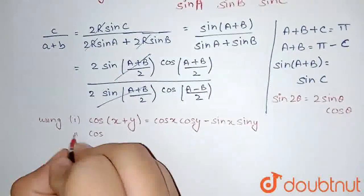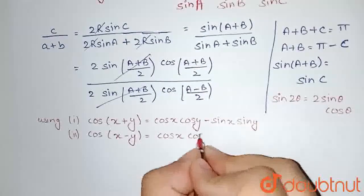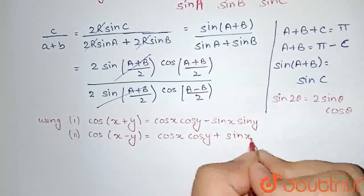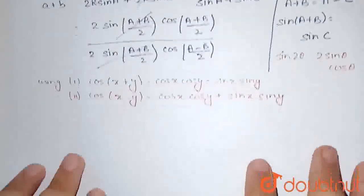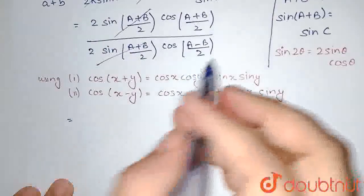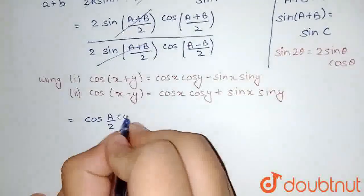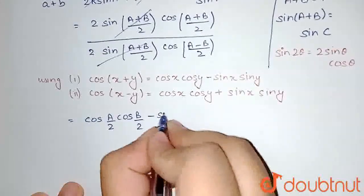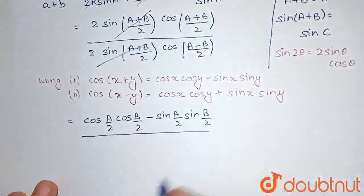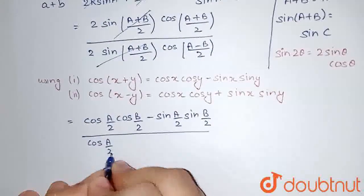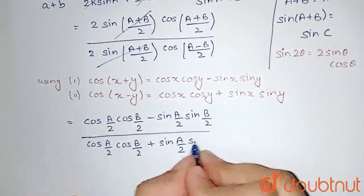Using these two formulas, in the numerator I get cos(A/2)·cos(B/2) − sin(A/2)·sin(B/2), and in the denominator I get cos(A/2)·cos(B/2) + sin(A/2)·sin(B/2).